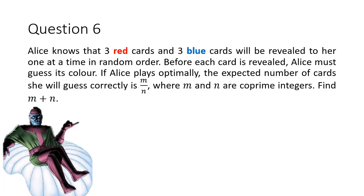So Question 6 goes as follows. We are given 3 red cards and 3 blue cards, and they'll be revealed to Alice in some random order. Before each card is revealed, Alice must guess its colour. We assume that Alice is some kind of math genius and she's going to play optimally. Her expected result is some fraction m over n.